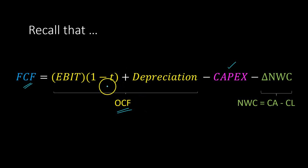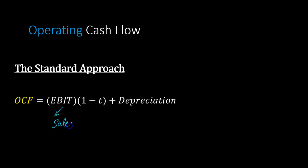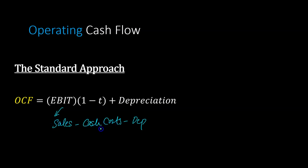Let's first take a look at the standard equation. The standard approach is earnings before interest and taxes multiplied by one minus the tax rate, plus depreciation. Earnings before interest and taxes is essentially calculated as sales, and then you subtract costs. We typically differentiate between cash costs and non-cash costs like depreciation. Depreciation is a non-cash expense; all other costs like wages, salaries, utilities, and marketing expenses fall under cash costs. So EBIT is the difference between all of these.